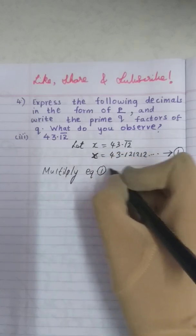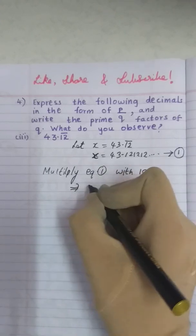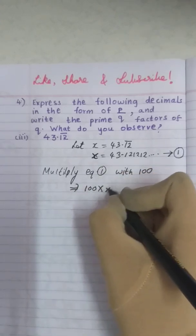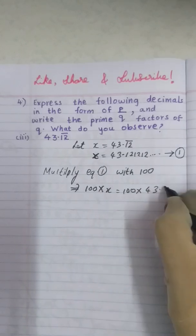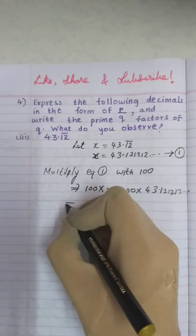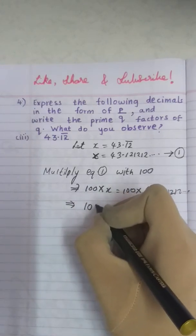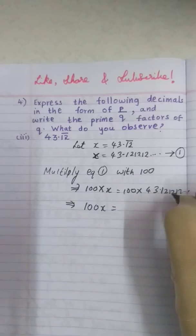So multiply equation 1 with 100. So this becomes 100 into x is equals to 100 into 43.121212 and so on. What is 100 into x? 100 into x will be 100x and how to multiply this 100 with 43.121212.